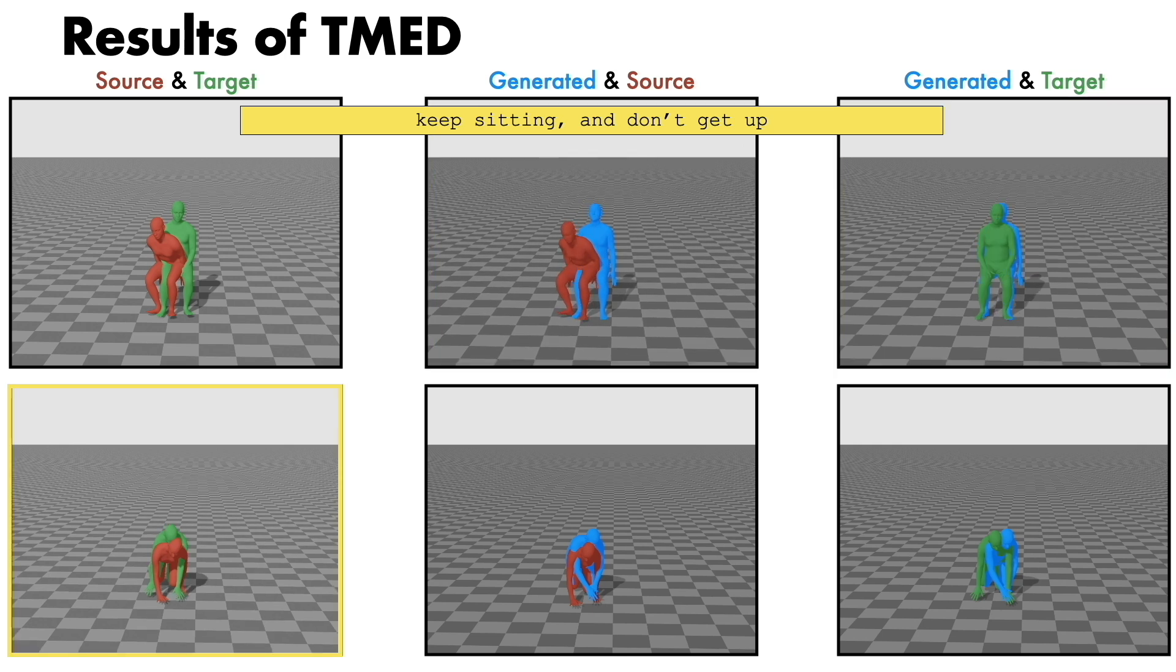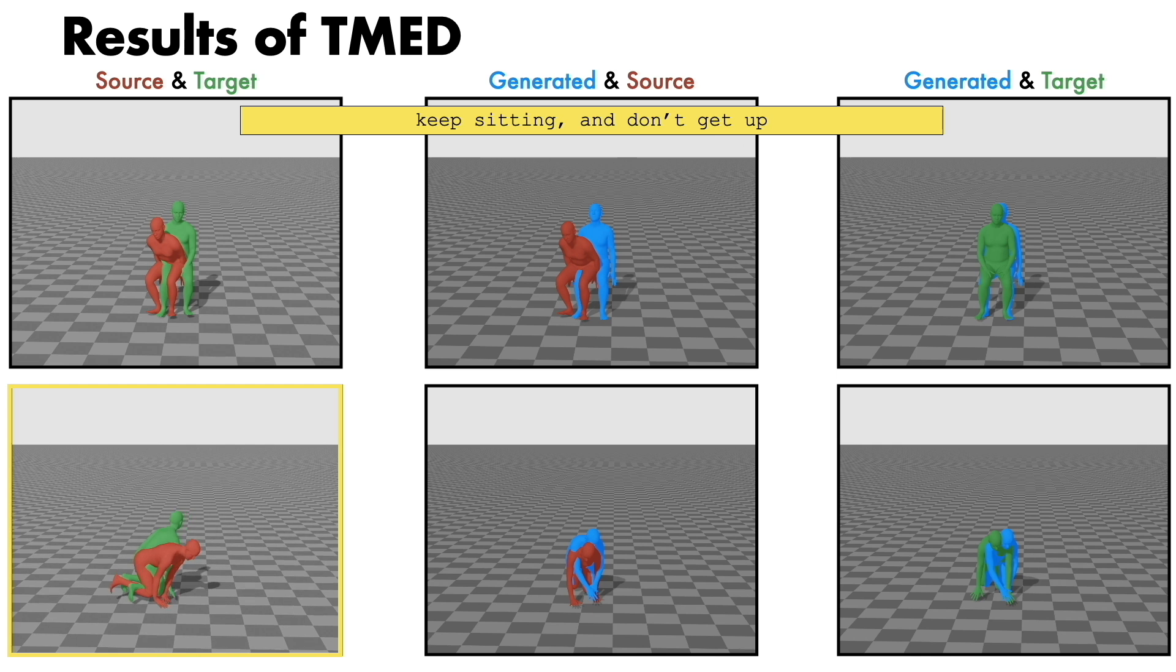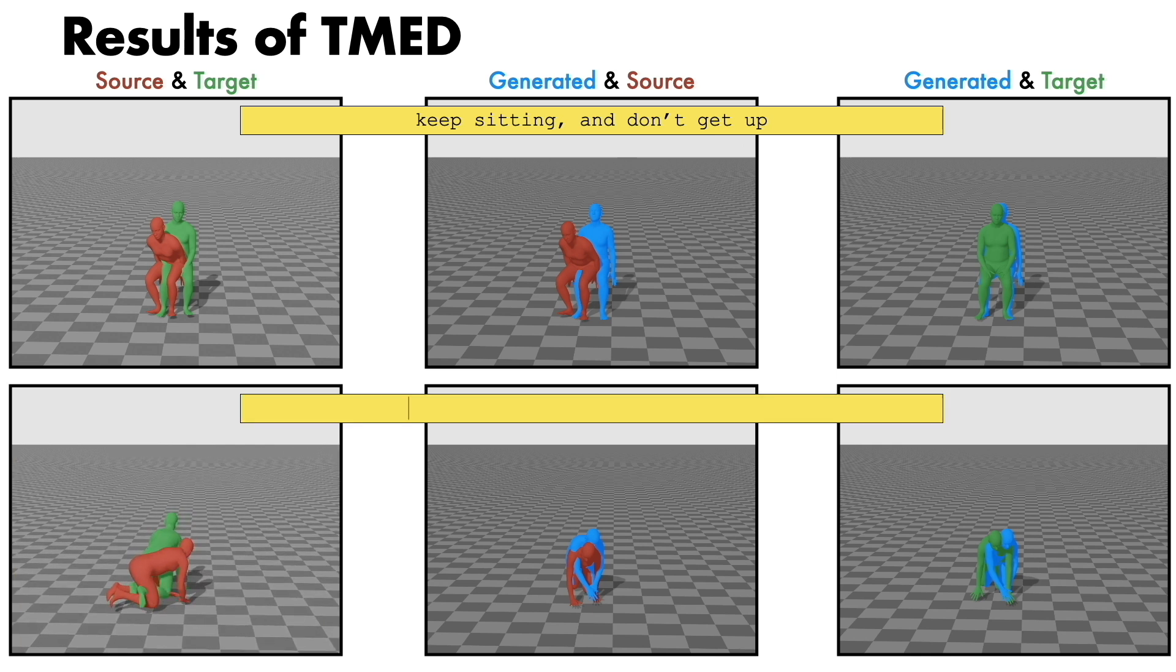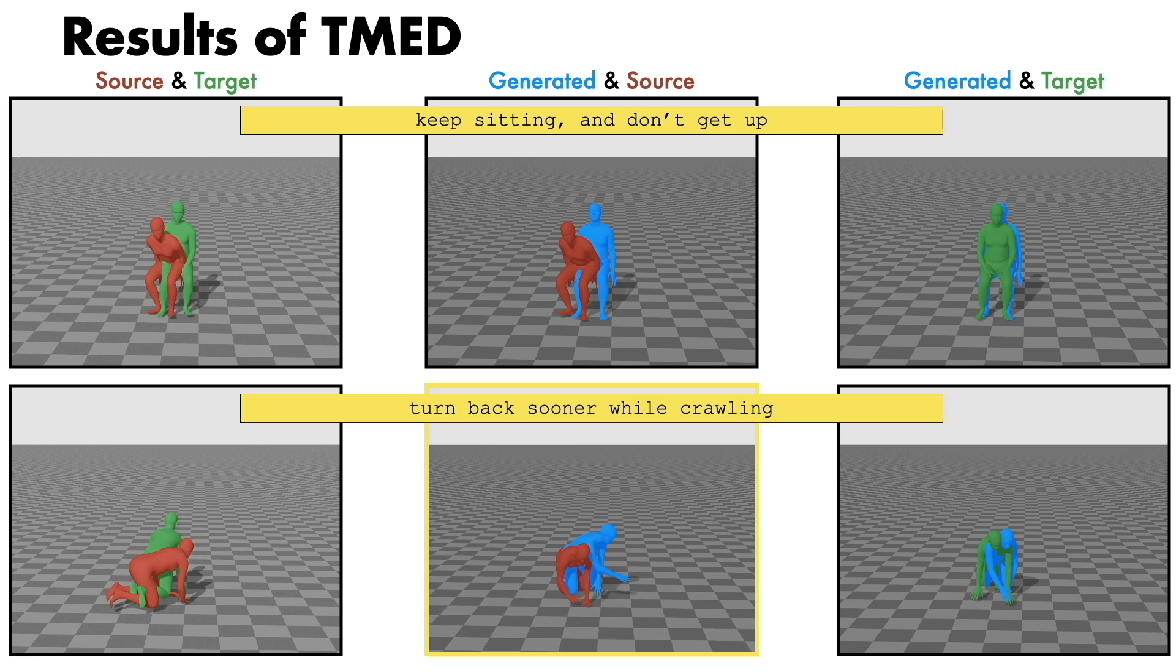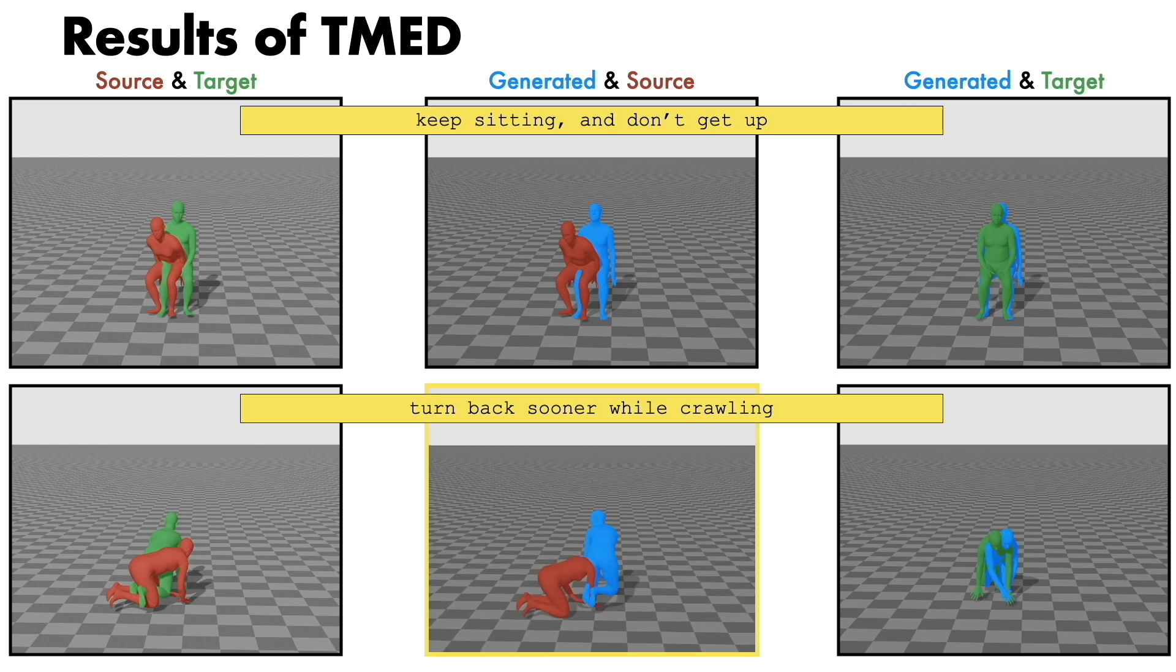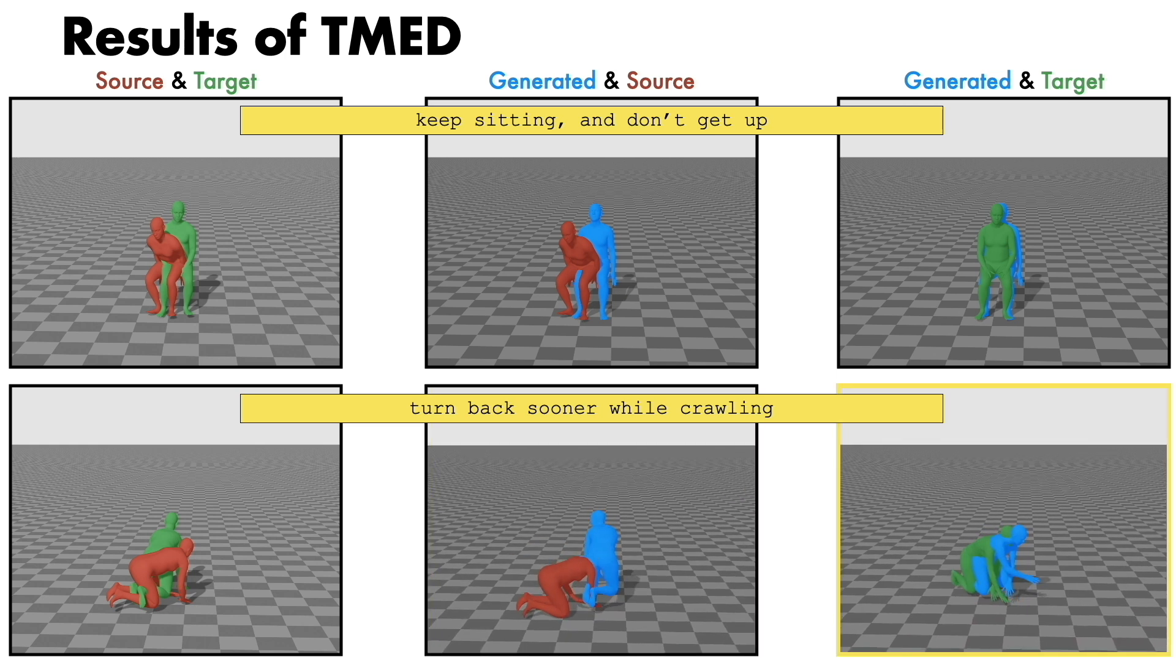Next, given the edit text turn back sooner while crawling, our model correctly generates a crawling action that turns left earlier than the one in the source motion.